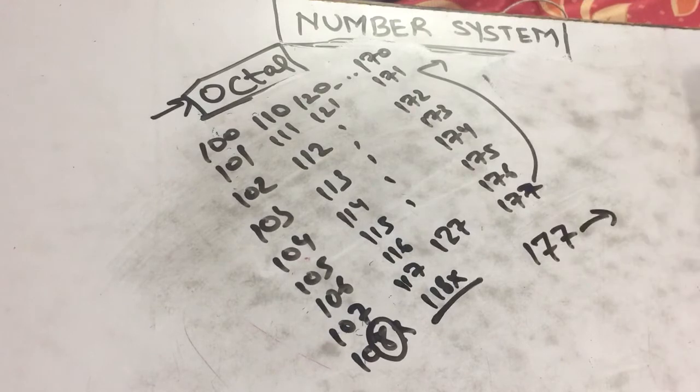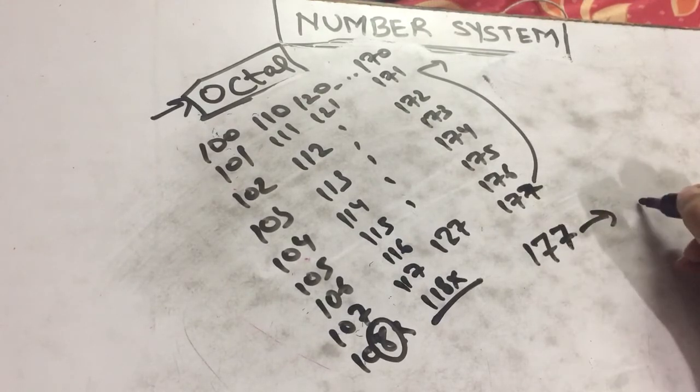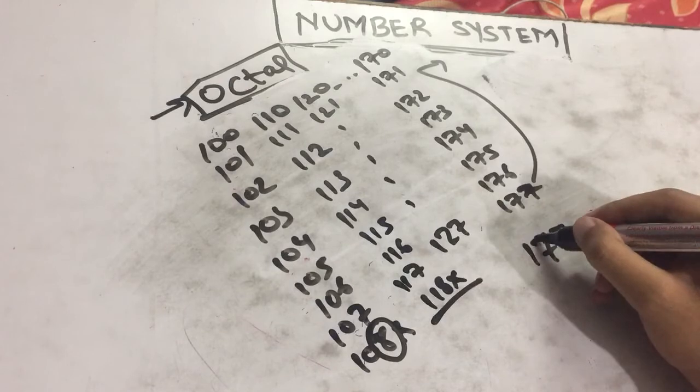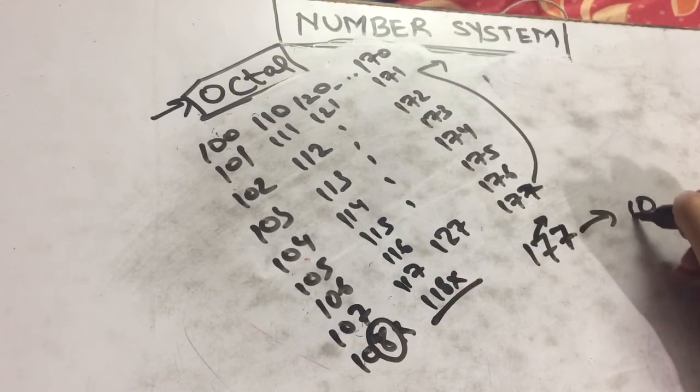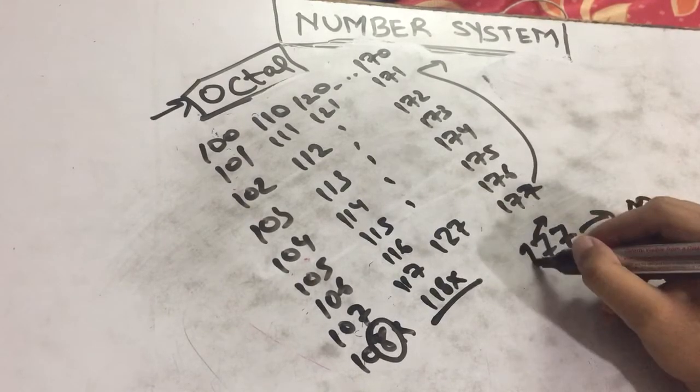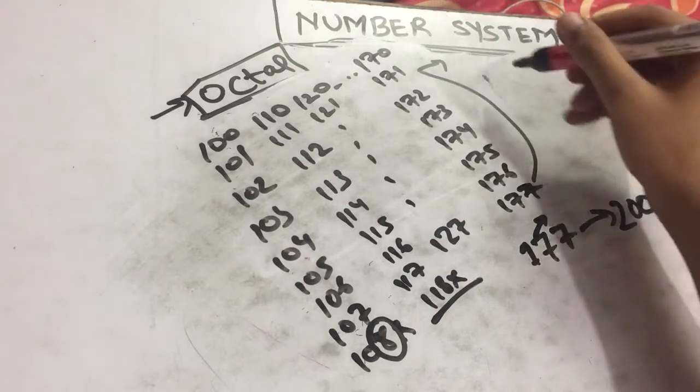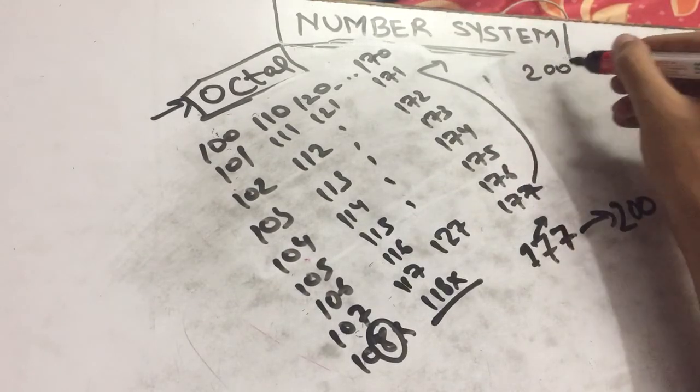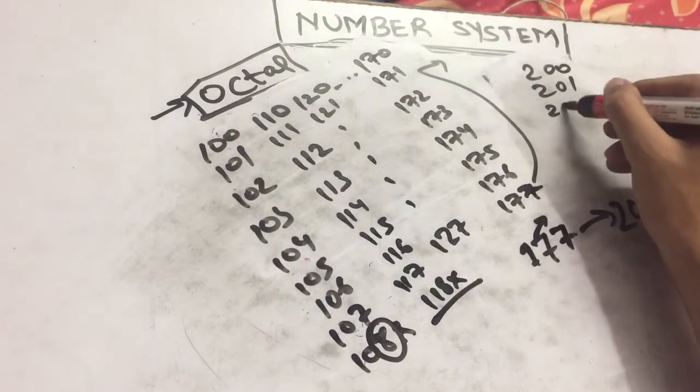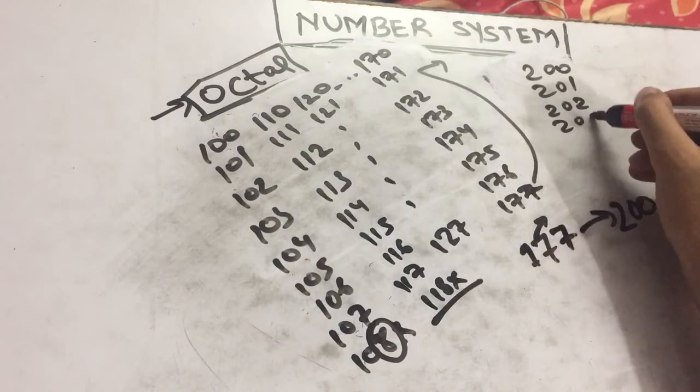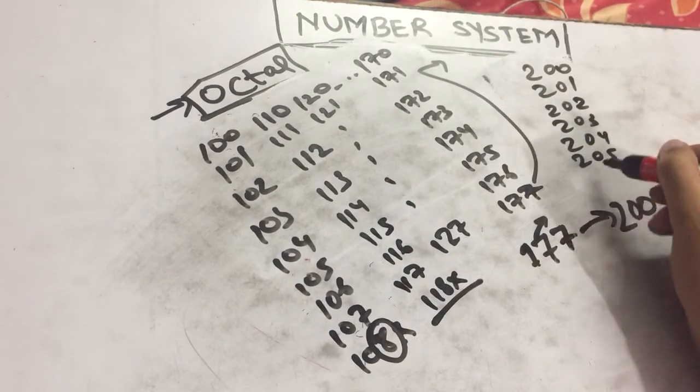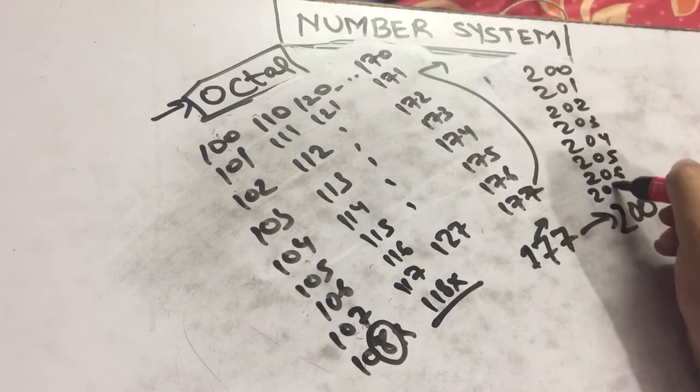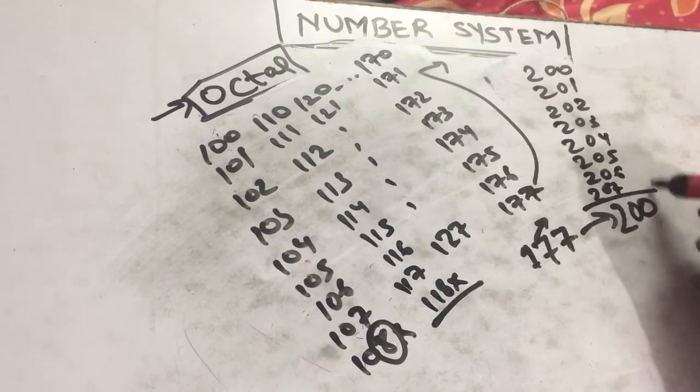What will come after 177? After 177, the next number would be after 7 comes 0 with 1 carried. After 7 comes 0, so again 1 carried, and 1 plus 1 is 2. The next number will be 200.